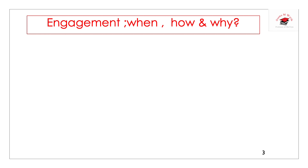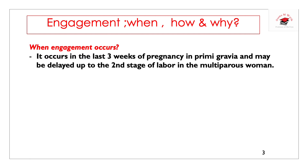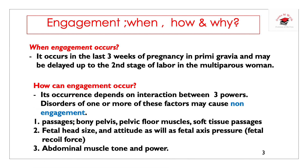When it comes to the engaging head — when it is engaged, how it is engaged, and why it is engaged: when engagement occurs, it occurs in the last three weeks of pregnancy in the primigravida, and may be delayed up to the second stage of labor in the multiparous woman. How engagement occurs depends on the interaction between three powers.